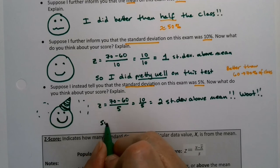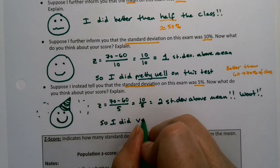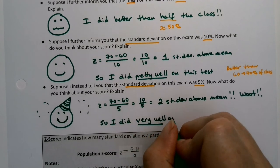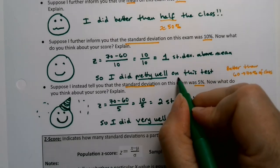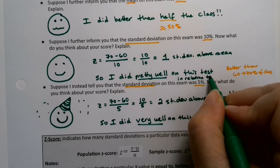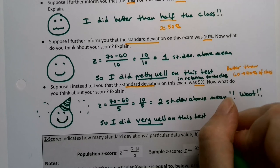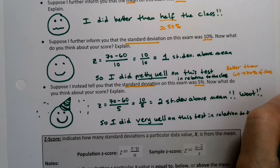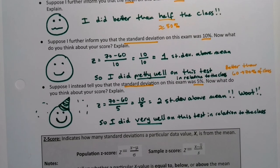That means you did very well. Not just pretty well. I did very well on this test in relation to the class. And that's the trick. These are in relation to the class and to others. And that's what a measure of position is. It's telling you how well you did in relation to the class.